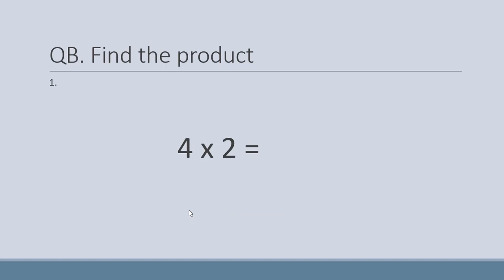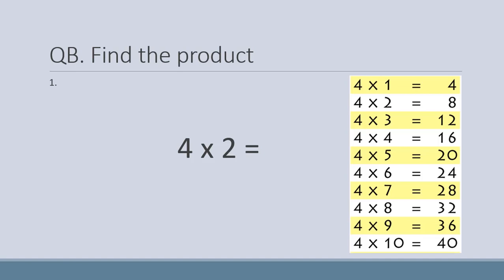Question number b: find the product. Four multiply two — what is the product? Product is the answer of multiplication. Product hamare paas multiplication ka jo answer hota hai usko hum product kehte hain. So first write the table of four in the rough column so it is easy for you to find the product. Four one are four, four two are eight, so write eight. The answer is eight.